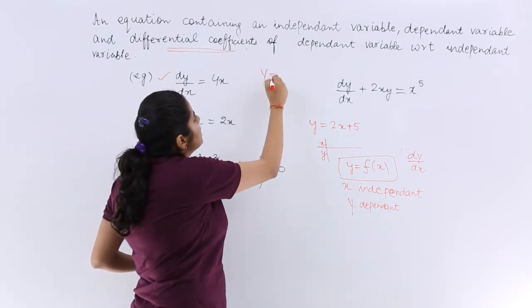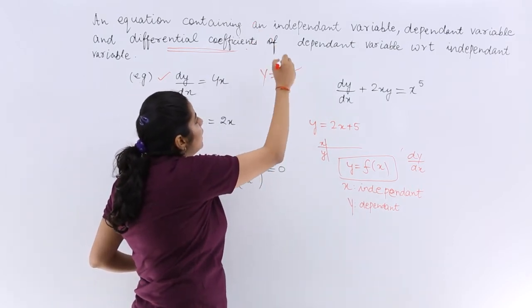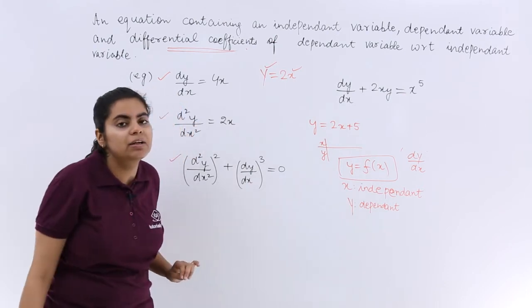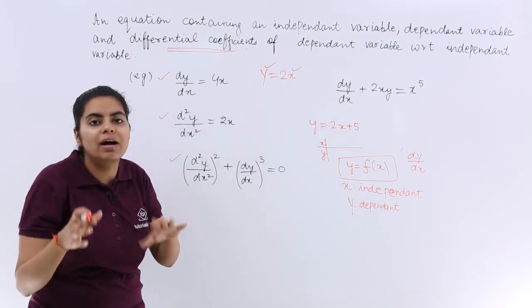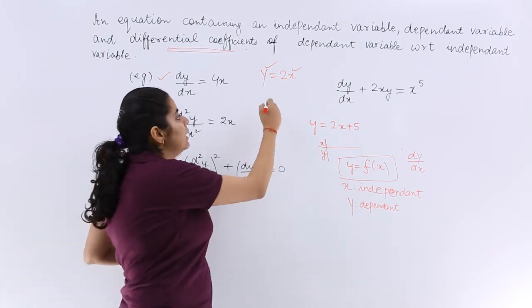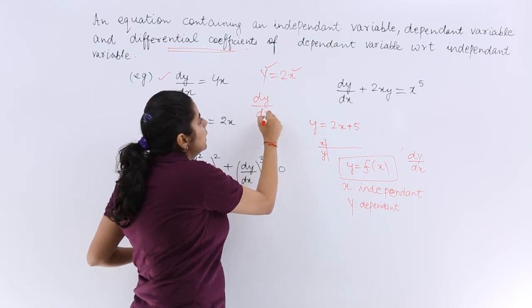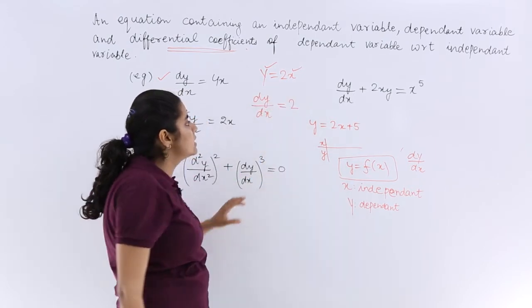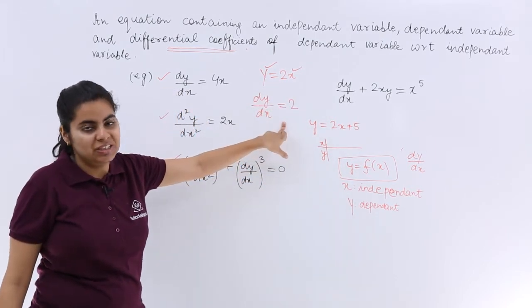If I say y equals 2x, there is independent variable, there is dependent variable, but there is no dy by dx. Until and unless you differentiate it and then you get like this, this is your differential equation.